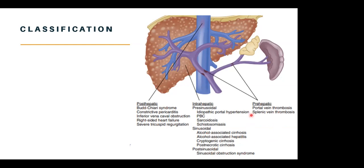For pre-hepatic portal hypertension, we have portal vein thrombosis, which is quite common. We often see patients with thrombophilias or those with JAK2 positive mutations giving us this condition. We also have splenic vein thrombosis, and the underlying risk factors are as discussed.